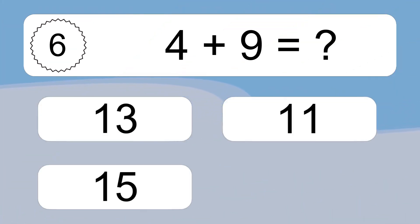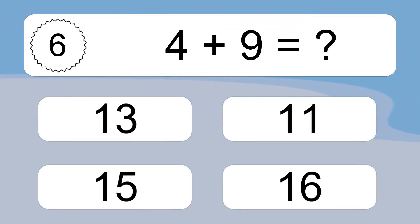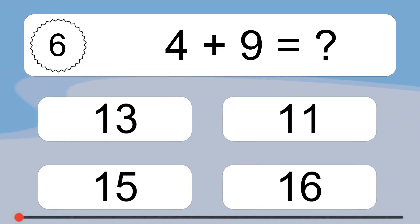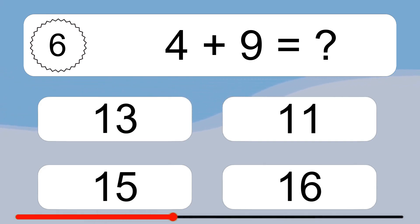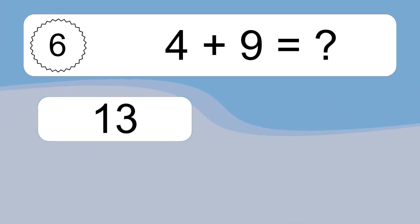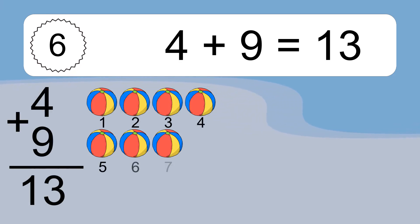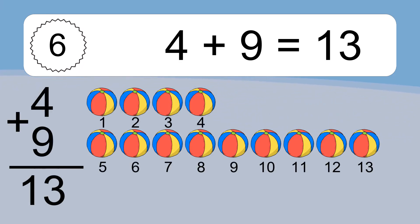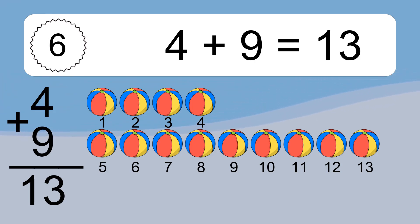4 plus 9 equals what? 4 plus 9 equals 13. Let's count it: 1, 2, 3, 4, 5, 6, 7, 8, 9, 10, 11, 12, 13.